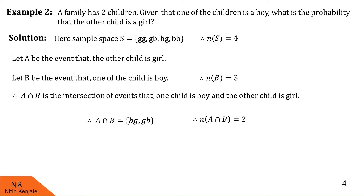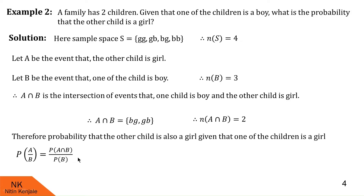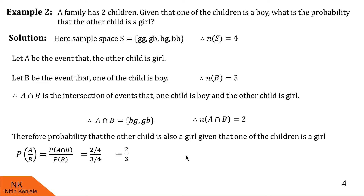We find the probability that the other child is a girl given that one child is a boy, denoted P of A given B. By conditional probability: P of A intersection B is 2 by 4, and P of B is 3 by 4. When the 4s cancel, we are left with 2 by 3. So the probability that the other child is a girl given one child is a boy is 2 by 3.